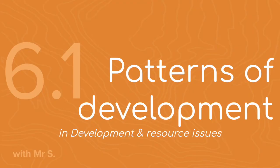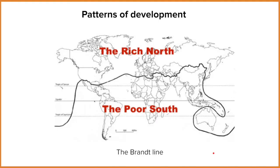Let's start off with looking at what the pattern of development actually is. You might have come across this map before — this is called the Brandt Line. This map came about in the 1980s by a German politician called William Brandt. He was suggesting that there is a visible pattern of development, what we would call the rich north and the poor south. The idea was that Brandt drew a line through the world separating the richer countries, the HICs, from the poorer countries, the LICs.